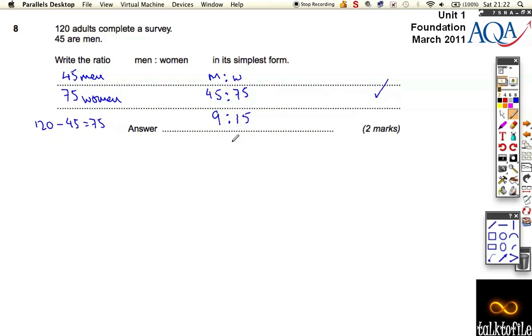We get one mark for that, but we're still not done because three goes into both of these. Three goes into nine three times, and three goes into fifteen five times. We want it in its simplest form - we need to break it down as much as we possibly can.